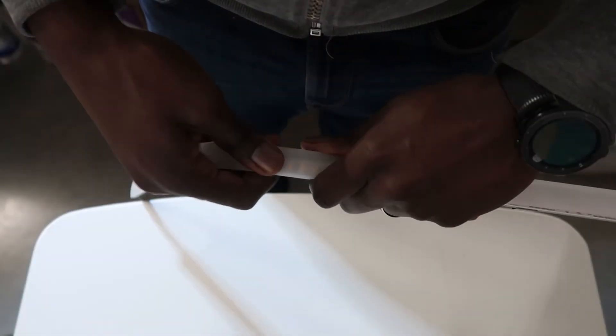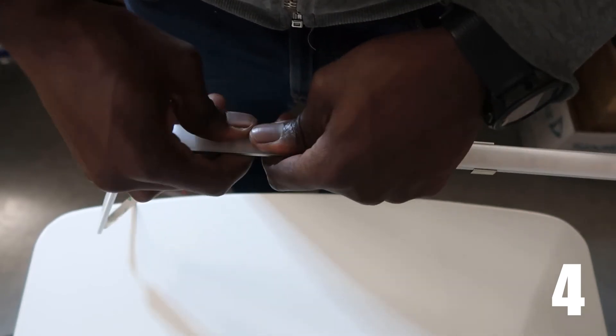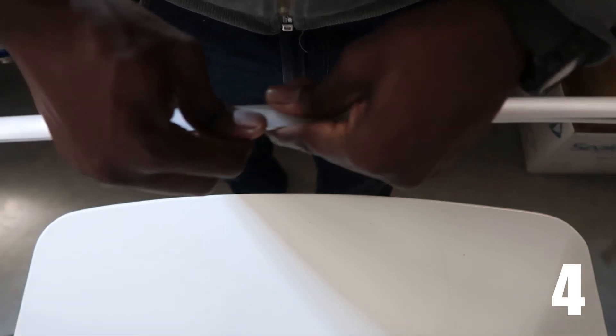Then you can go ahead and clip the PMMA diffuser on top of the LED profile and just make sure it's clipped all across the profile. That will be it.